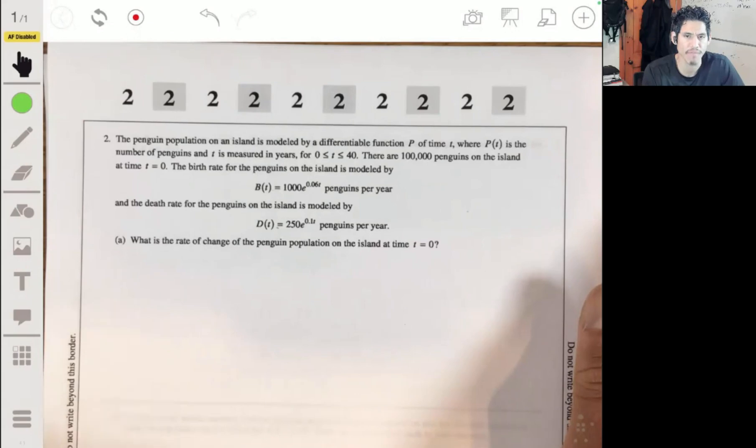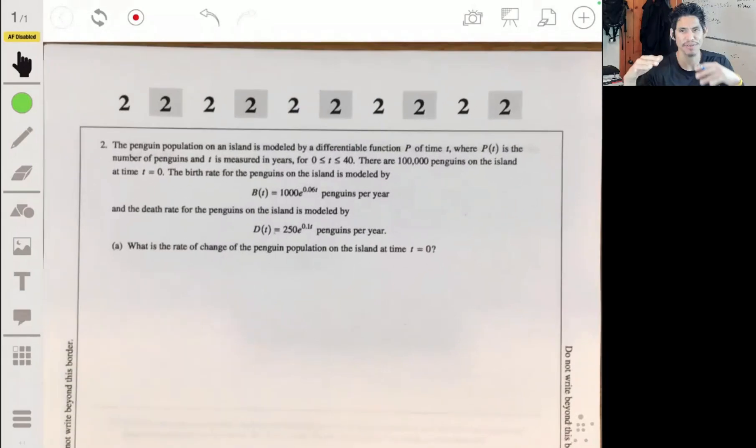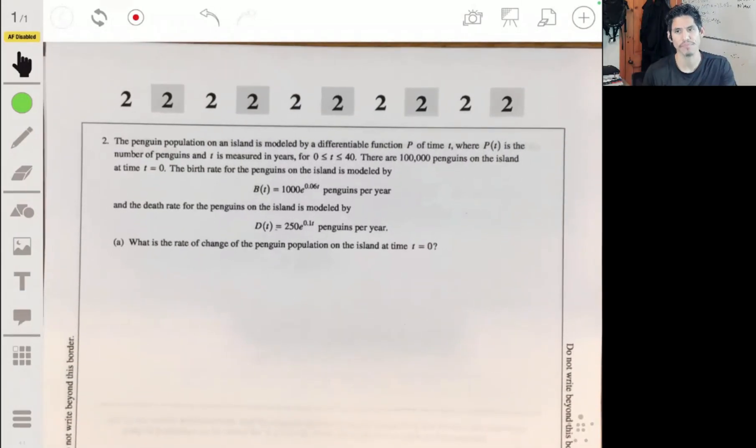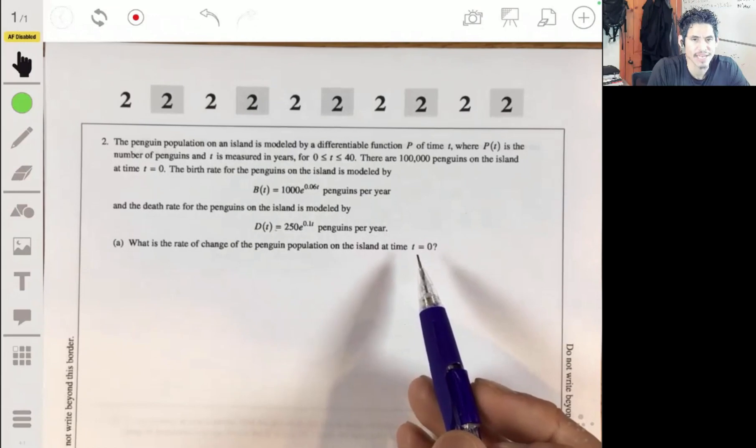What's going to happen is you're going to have the birth rate minus the death rate, and that number will tell you how much the population is increasing by in terms of the rate. In this case, it's asking for it at the very beginning, right at the start. What's the rate of change?